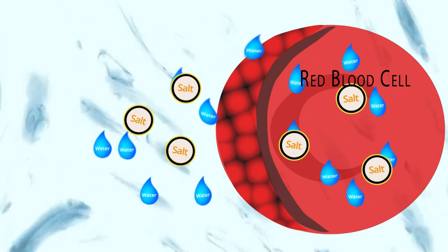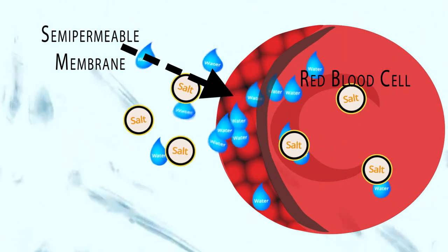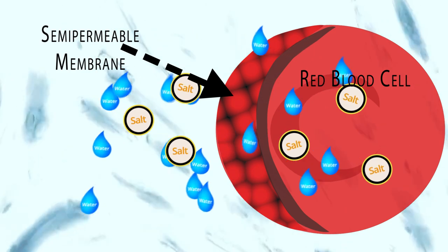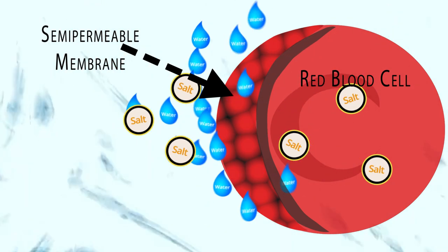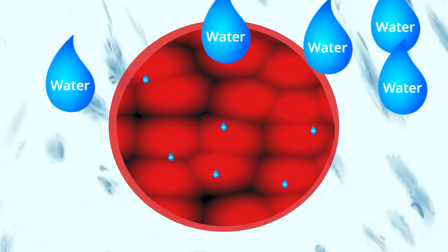Passive Transport is the movement of molecules across cell membranes without using any energy. In all cells, osmosis is the movement of water through a semi-permeable membrane.